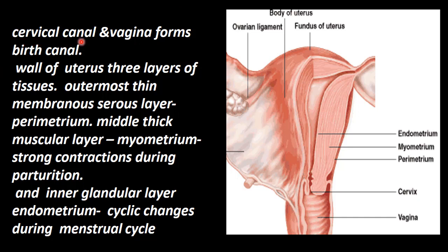The cervical canal connects the cervix to the vagina, forming the birth canal from the uterus. The wall of the uterus is made up of three layers of tissue. The outermost layer is called the perimetrium — it is a thin membranous serous layer. The middle layer is called the myometrium, which is very thick and muscular. The myometrium produces strong contractions during parturition and plays a major role during delivery.